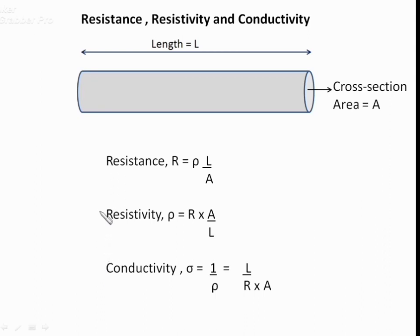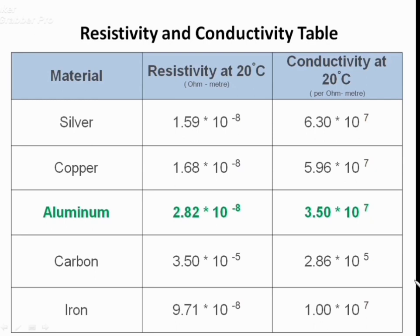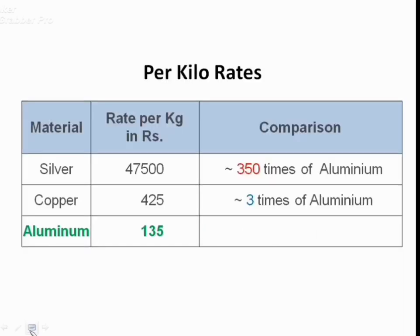In this table we compare resistivity and conductivity of five metals. Silver has the lowest resistivity and highest conductivity. Aluminium ranks third with resistivity 2.82×10⁻⁸ and conductivity 3.5×10⁷. You can also see resistivity and conductivity of carbon and iron. Regarding rates: silver is ₹47,500 per kg, copper ₹425 per kg, and aluminium ₹135 per kg.